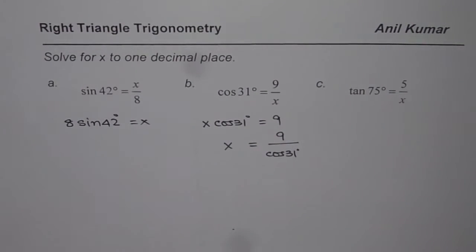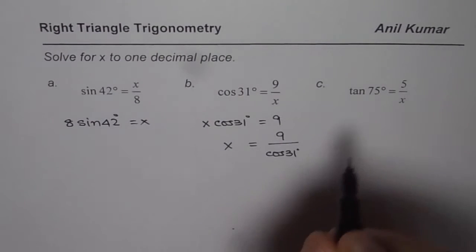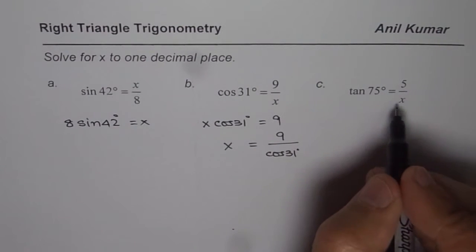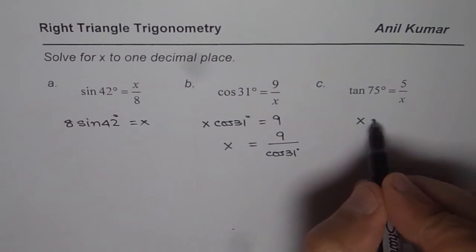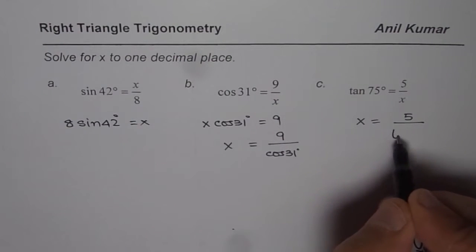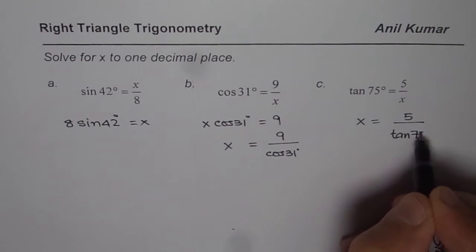I hope you get the steps involved, right? You could directly do it also. You could take x on this side and say x equals 5 divided by tan of 75 degrees.